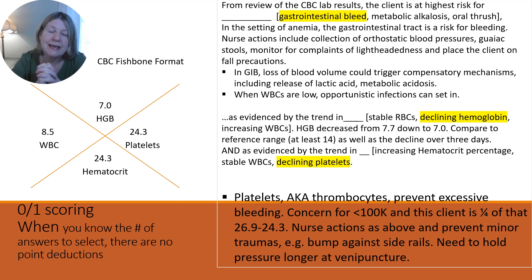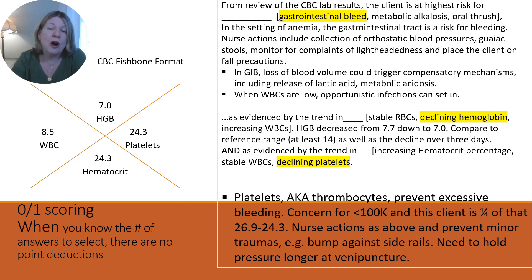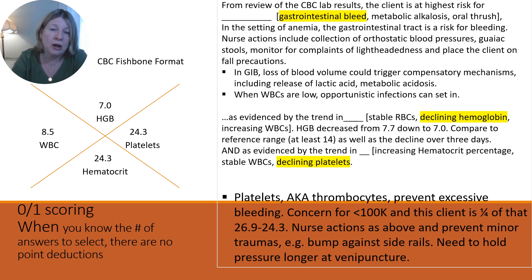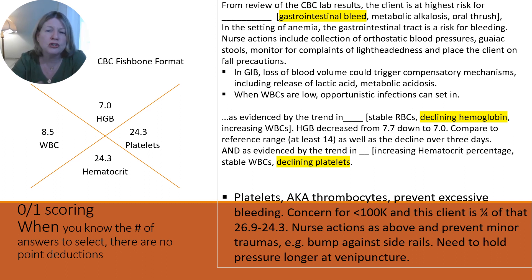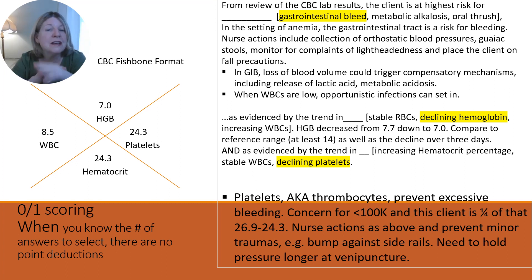Platelets, also known as thrombocytes, prevent excessive bleeding in our body. There is a concern any time the platelet count is less than 100,000, and this client is only a quarter of that at 26.9, declining down to 24.3. Nursing care plan actions include those mentioned above, and also prevent even minor traumas like bumping against a side rail. Any time there is a venipuncture, hold pressure on that site a little longer because of their low platelet count.